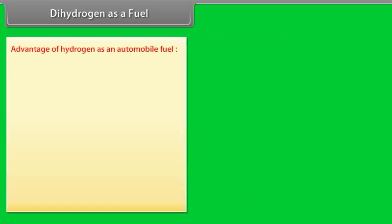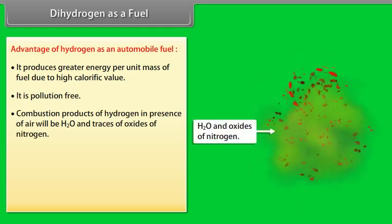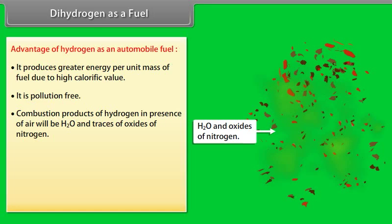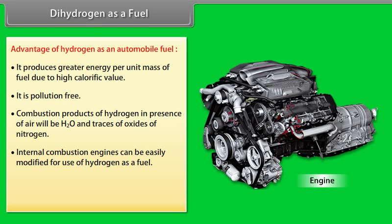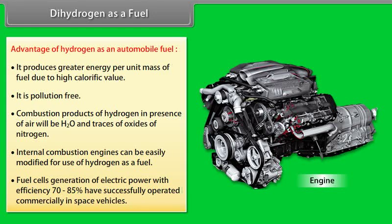Advantage of hydrogen as an automobile fuel: It produces greater energy per unit mass of fuel due to high calorific value. It is pollution free. Combustion products of hydrogen in presence of air will be H2O and traces of oxides of nitrogen. Internal combustion engines can be easily modified for use of hydrogen as a fuel. Fuel cells for generation of electric power with efficiency 70-85% have successfully operated commercially in space vehicles.